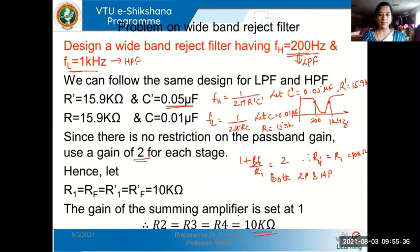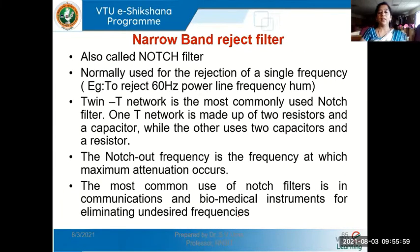This is how problems will be asked even in the exam — to design for given values of FH and FL. If FC is given, use FC = √(FL × FH) to find FL and FH. If both are not given, assume one and find the other. With this, we can move on to the narrow band reject filter. We discussed the wide band reject filter in detail: its frequency response characteristics and design equations.